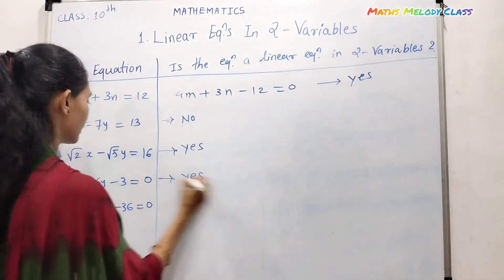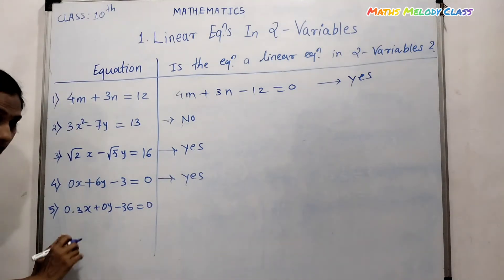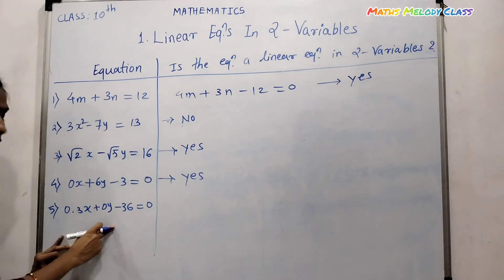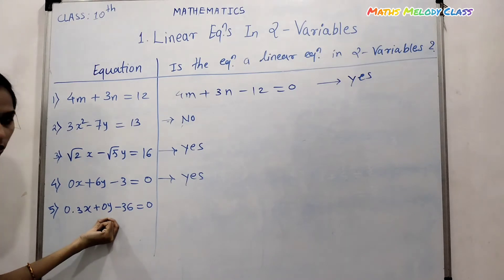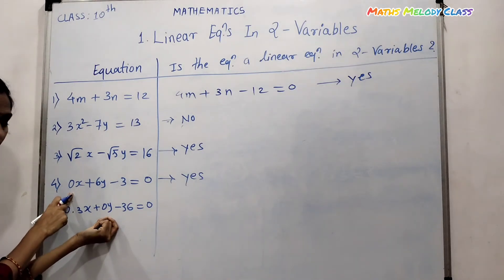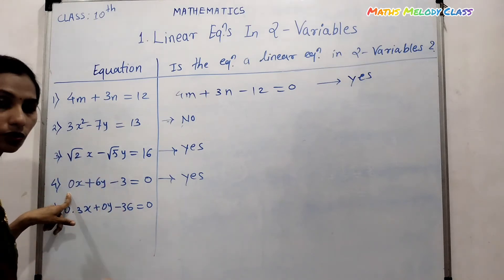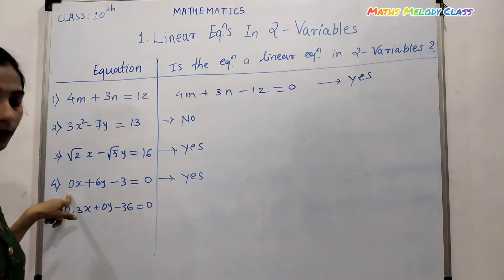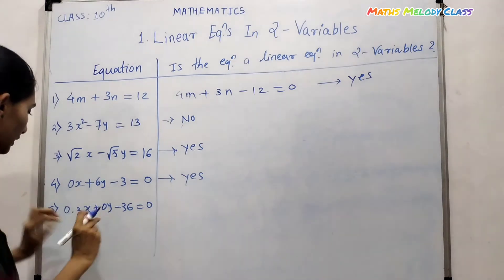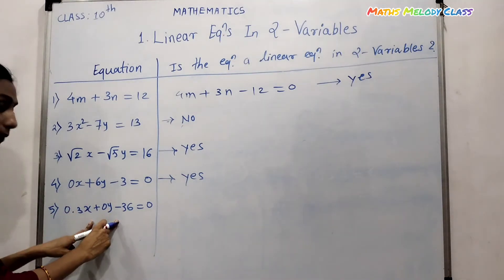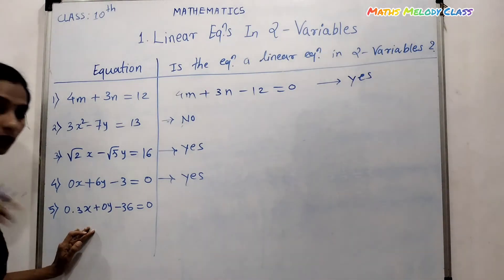Next: 0.3x plus 0y minus 36 equals zero. Even though the coefficient of y is zero, we can still write this in the standard form of a linear equation in two variables. So this is also a linear equation — we can write it in the form ax plus by plus c equals zero — and hence it qualifies as a linear equation in two variables — yes.